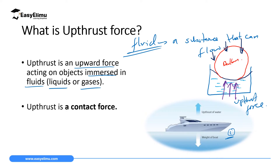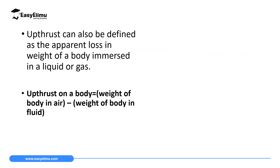Uptrust force is the reason ships and boats float on top of water — it makes bodies float on water and fluids in general. Uptrust force is a contact force, meaning it can only take place when the two bodies involved are touching each other. The balloon must be in contact with the water to receive an upward force. Similarly, a boat must be in contact with water for uptrust to take place.